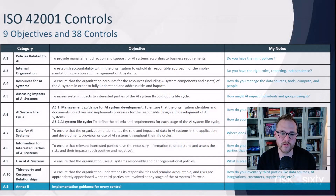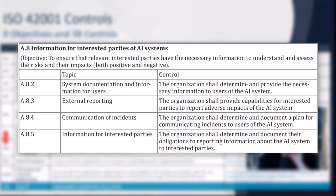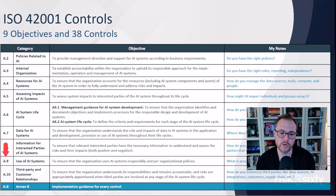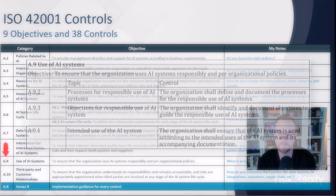A8 is information for interested parties of AI systems. This asks you to think about how you communicate important things to interested parties — that could be new information, permissions, or incidents. The focus is on having a communication strategy for providing information to interested parties.